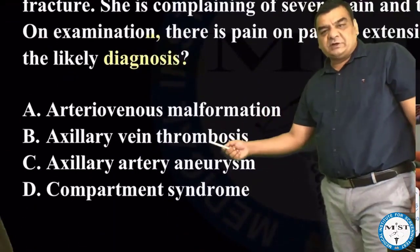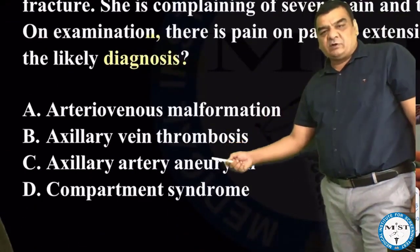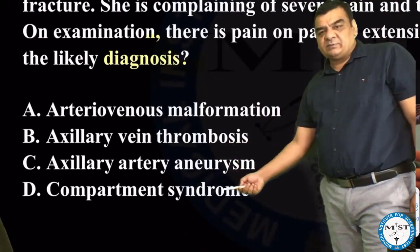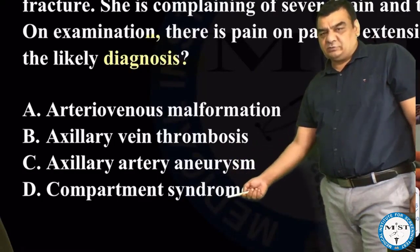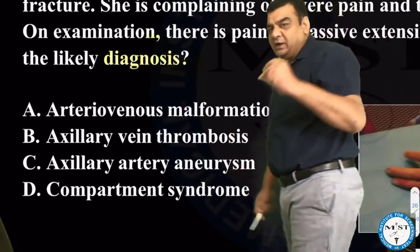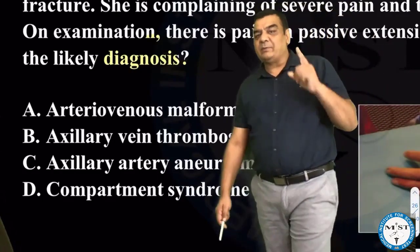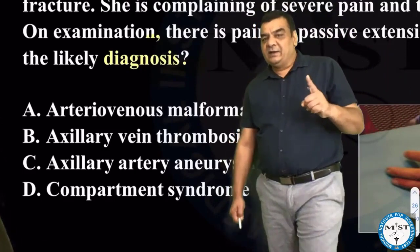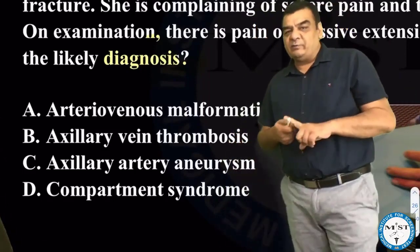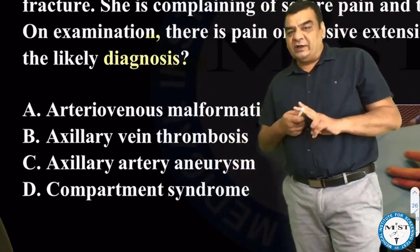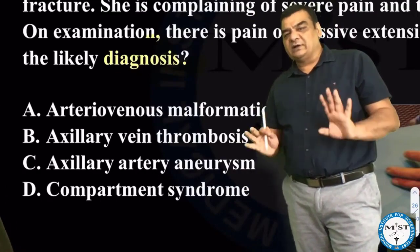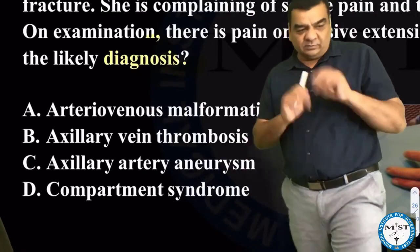The four options are: AV malformation, axillary vein thrombosis, axillary artery aneurysm, and compartment syndrome. The first three options are related to some vascular abnormality - whether it's an AV fistula type of thing, a vein thrombosis, or an artery aneurysm - and the fourth one is compartment syndrome.